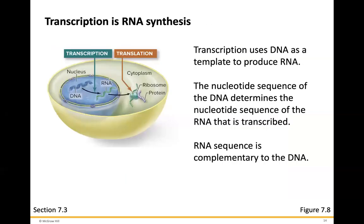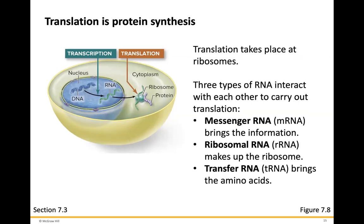Transcription is the process of RNA synthesis. Transcription uses DNA as a template to produce RNA. The nucleotide sequence of DNA determines the nucleotide sequence of the RNA that is transcribed, and the RNA sequence is complementary to that of DNA. Translation is protein synthesis and takes place at the ribosomes. Three types of RNA interact to carry out translation: messenger RNA, which brings the information; ribosomal RNA, which makes up the ribosomes; and transfer RNA, which brings the amino acids to the ribosome.